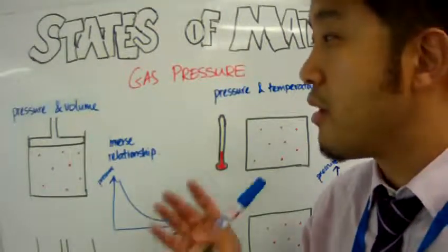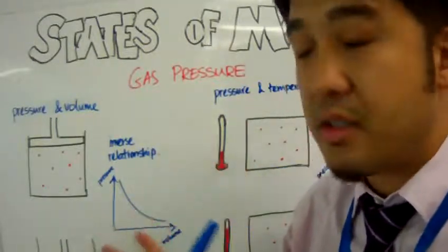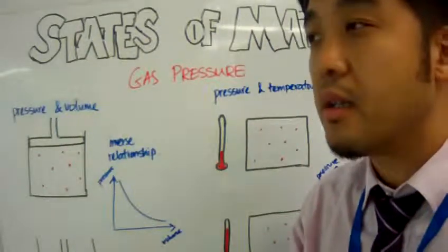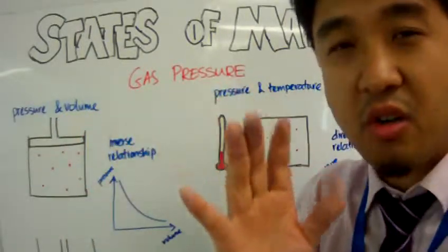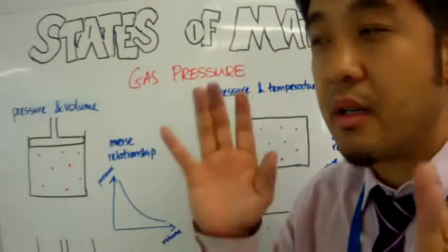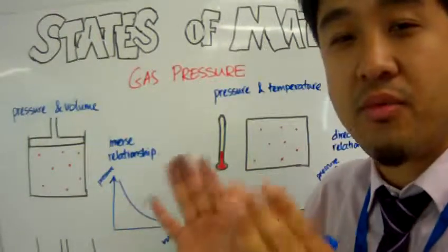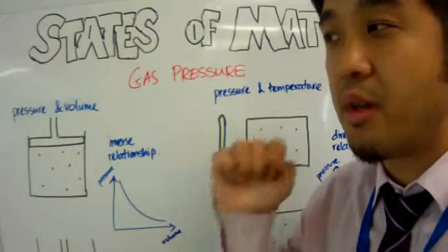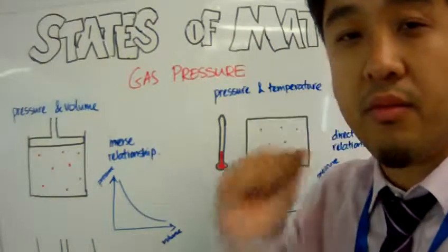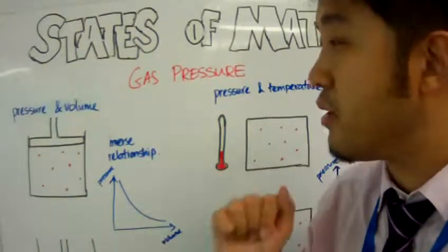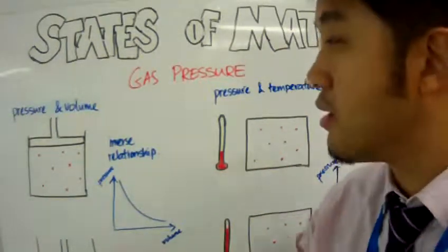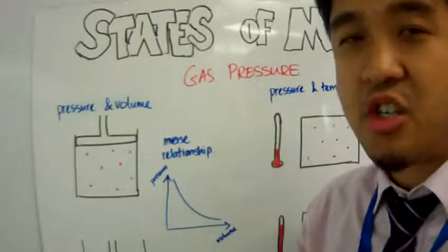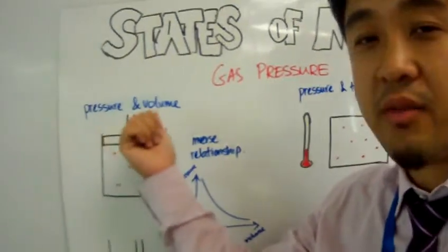That is gas pressure. But we cannot really isolate gas pressure on its own. The concept of gas pressure is very interrelated to two other properties, which are volume and temperature — or variables. So let's talk about the relationship between pressure and volume.